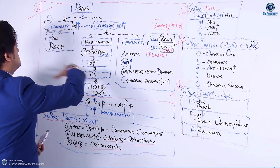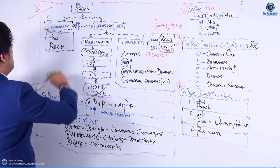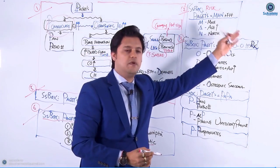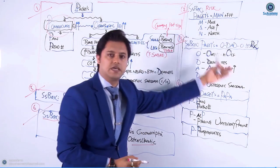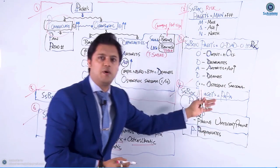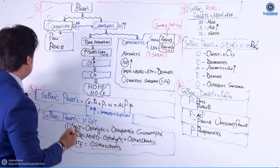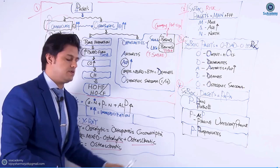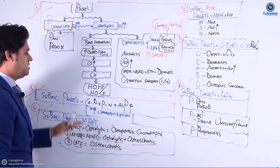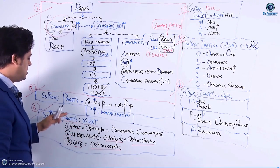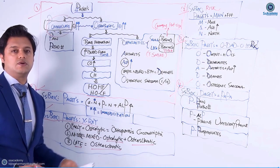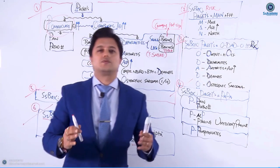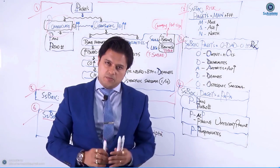Final summary: first box - Paget's disease involves osteoclast then osteoblast activity. Second box - risk factors: MAN (male, age, northern latitude, family history). Third box - complications: O DAD O. Fourth box - PAPA mnemonic: pain, pathological fractures, phosphatase, proline, phosphonates as treatment. Fifth box - calcium and phosphorus normal, only alkaline phosphatase raised. X-ray changes: early osteolytic, mixed, then late osteosclerotic lesions. I hope you enjoyed - thank you.